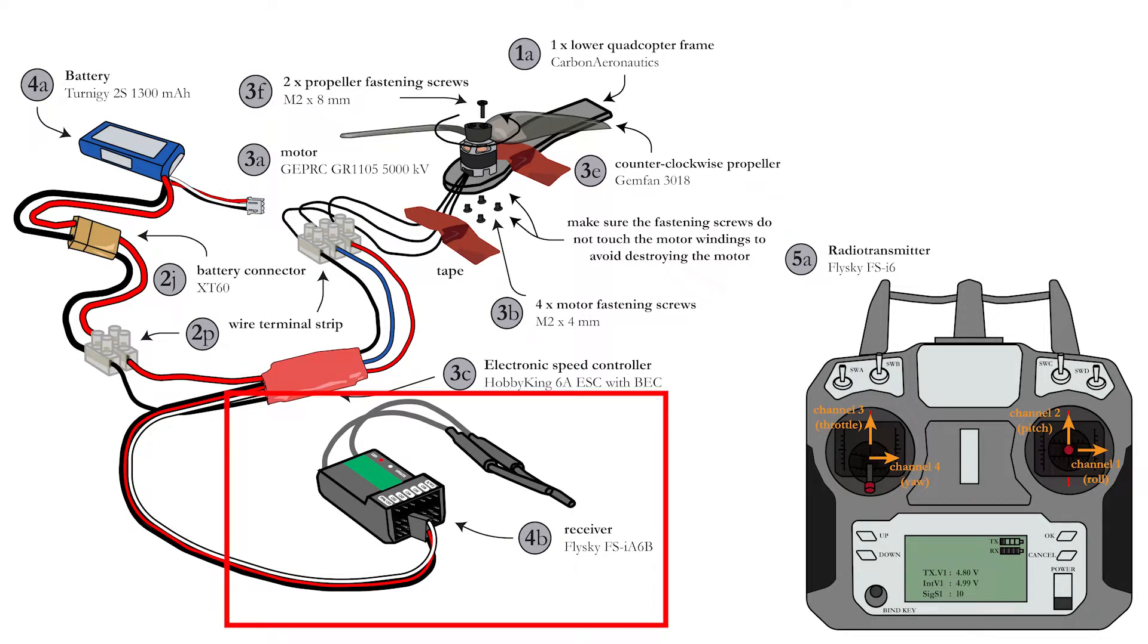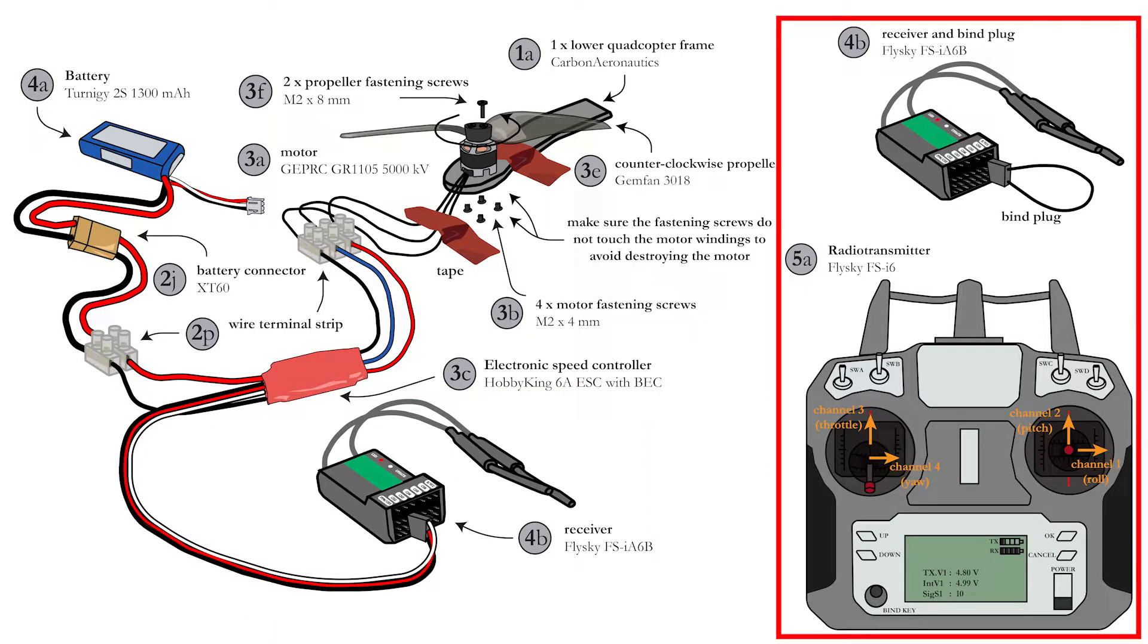Finish by connecting the ESC to the receiver. You will also have to bind the receiver to the transmitter in order to enable both to communicate with each other. The FS-iA6 receiver and transmitter are used for this project.